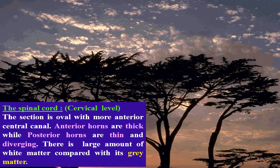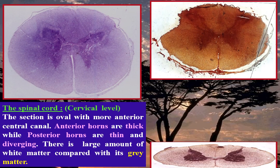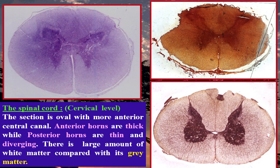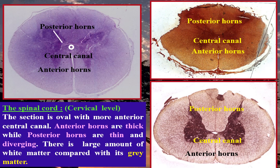Spinal cord, cervical level — by hematoxylin and eosin and silver. The section is oval with a slightly ventral central canal. The anterior horns are thick while the posterior horns are thin and divergent. There is a large amount of white matter compared with its gray matter.